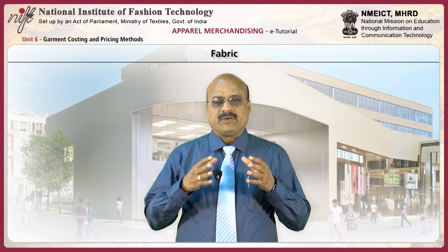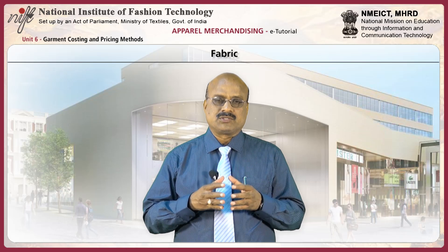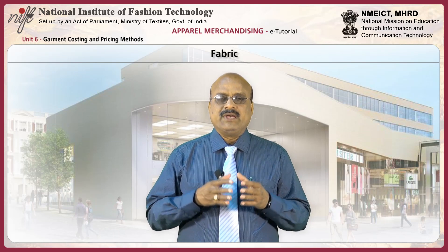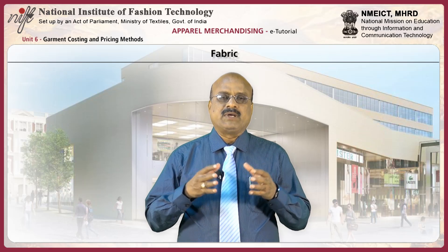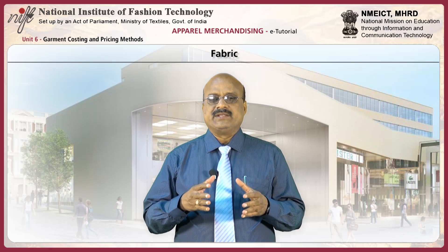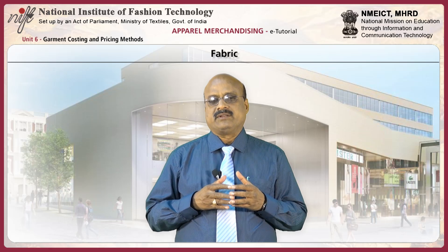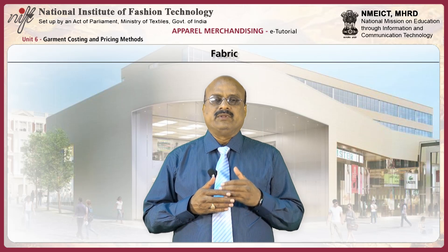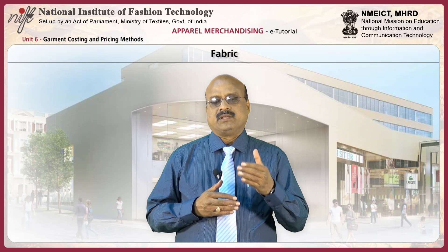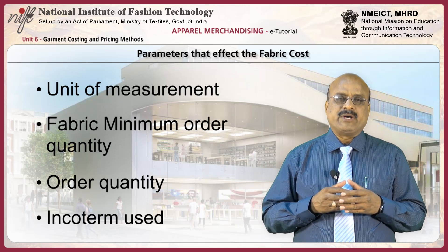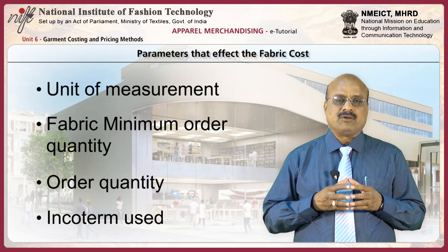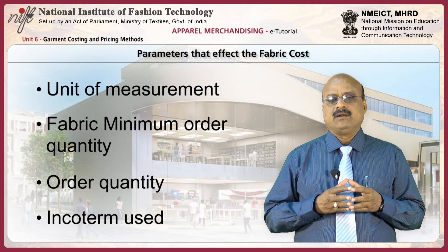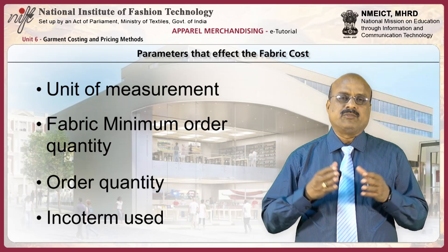Fabric accounts for 60 to 70 percent of the total cost of basic styled garments. In many cases, evaluating the quality and quantity of fabric consumed in the garment indicates, better than any other factor, the cost of producing it. The cost of fabric depends upon the type of fabric utilized in the garment. The various parameters that affect the fabric cost are: unit of measurement, fabric minimum order quantity, order quantity, and incoterm used.